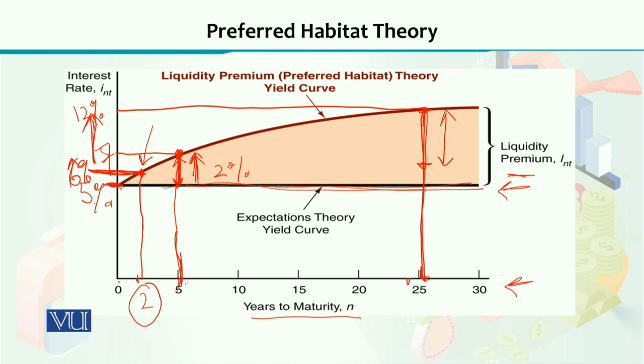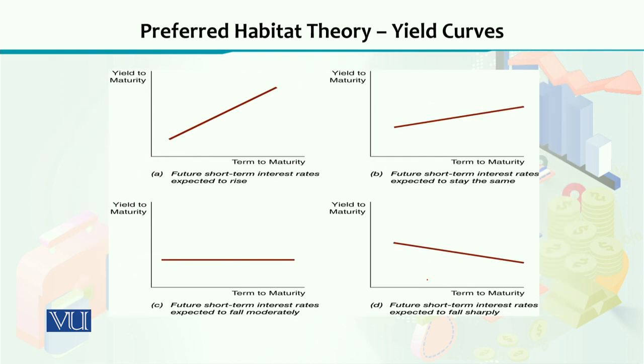The liquidity premium theory says that it's not just the average of short-term bond yields compared with the long-term yield. The long-term bond yield will not simply match the short-term average — the investor also expects a liquidity premium. That is another important aspect from the perspective of investors and from the perspective of those structuring bond packages across different time periods and maturities.